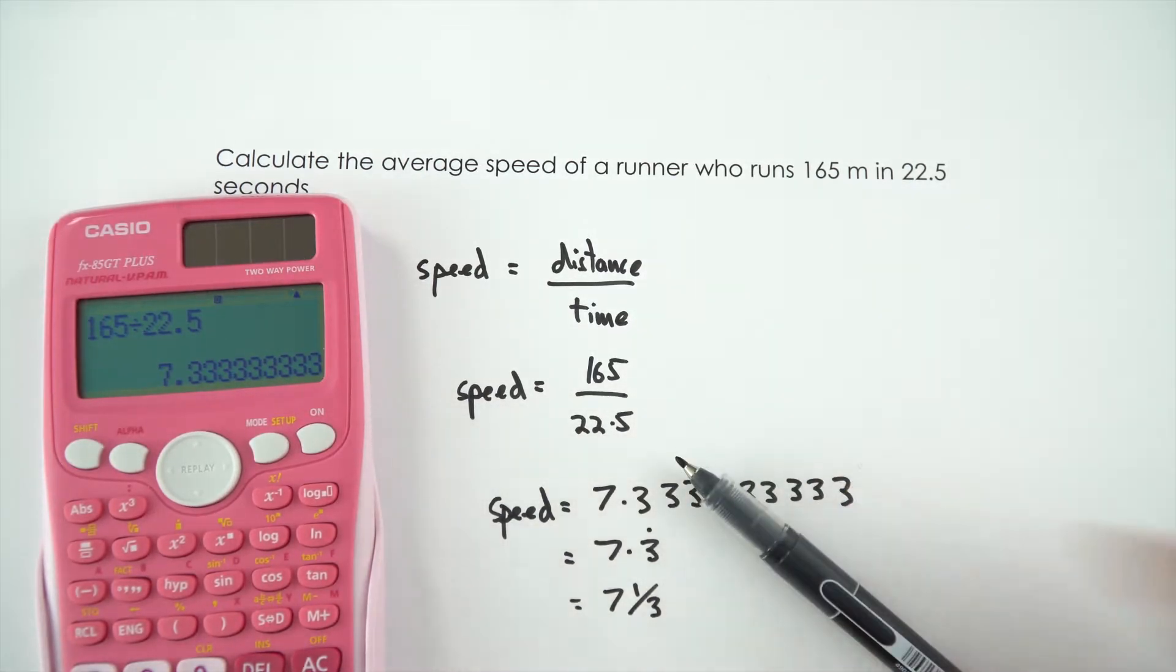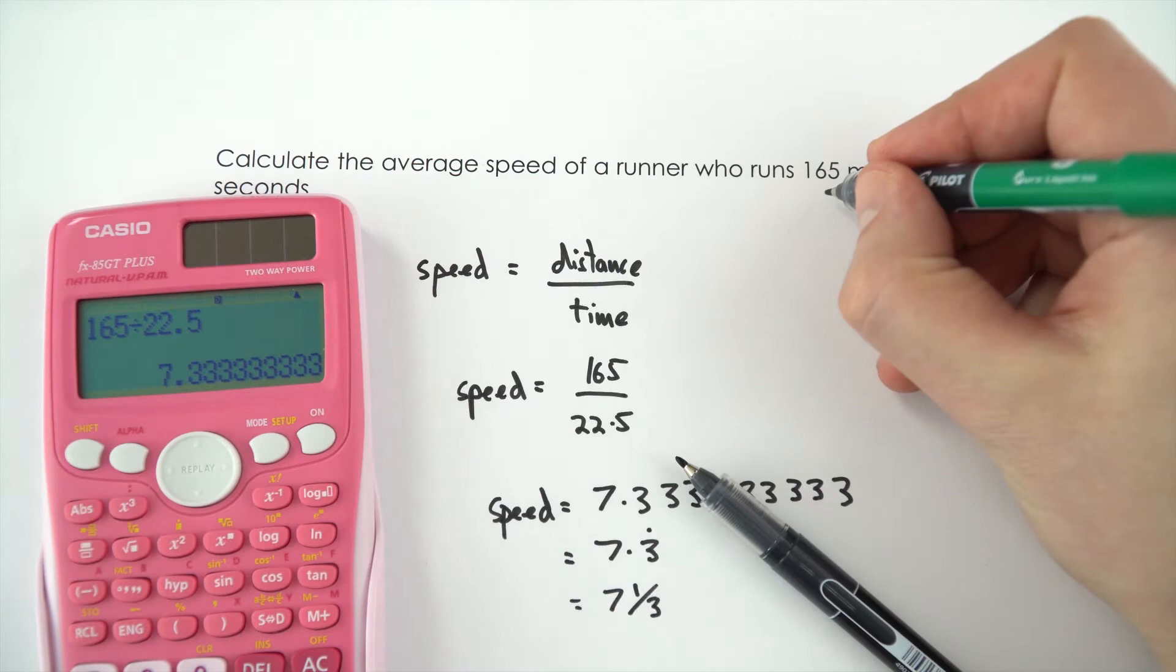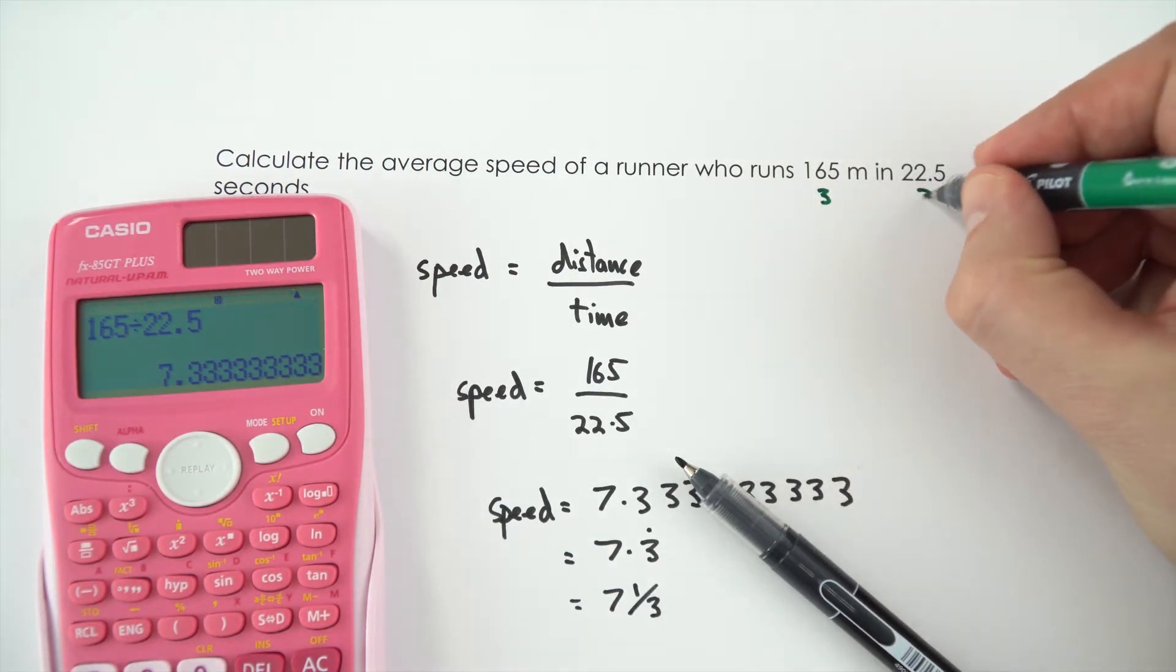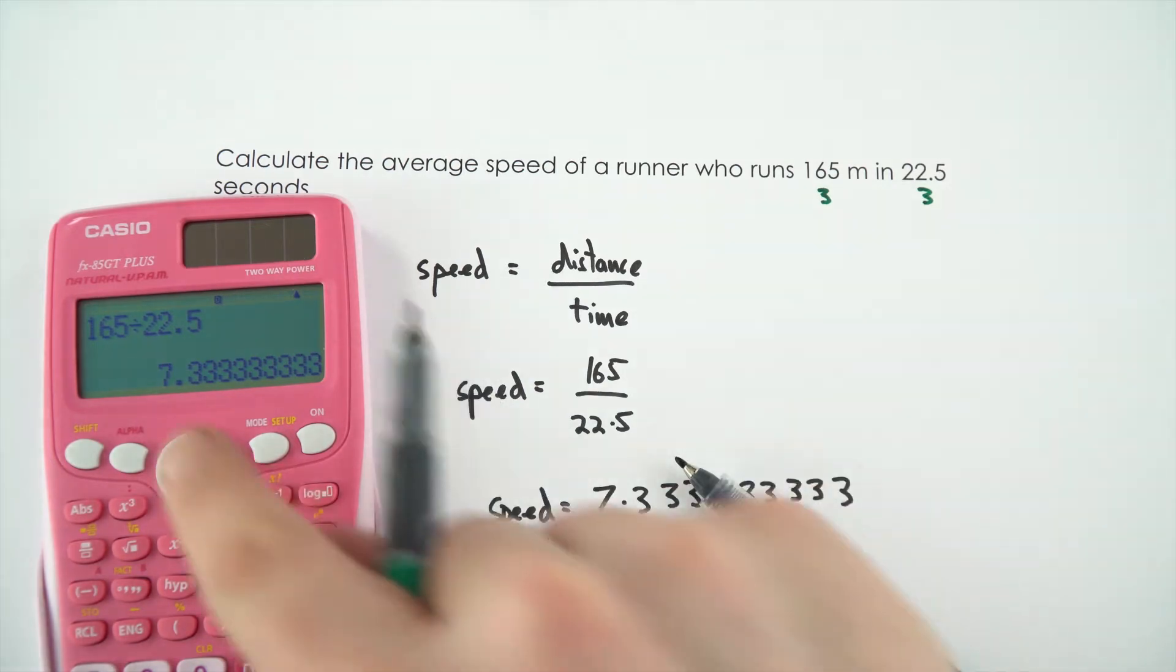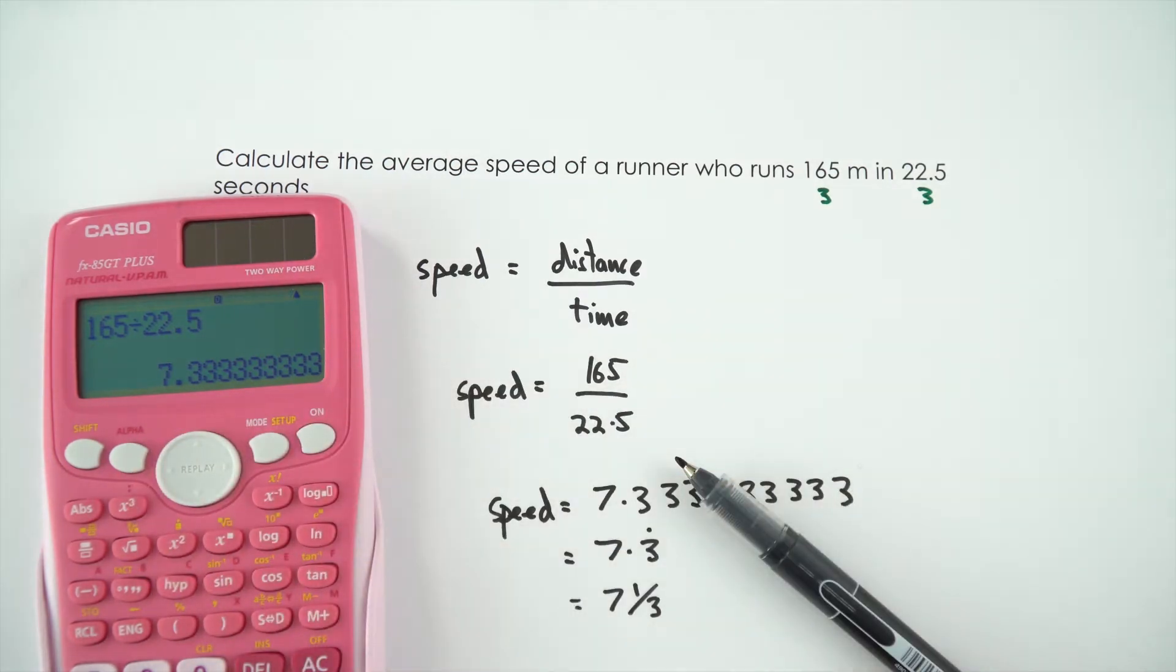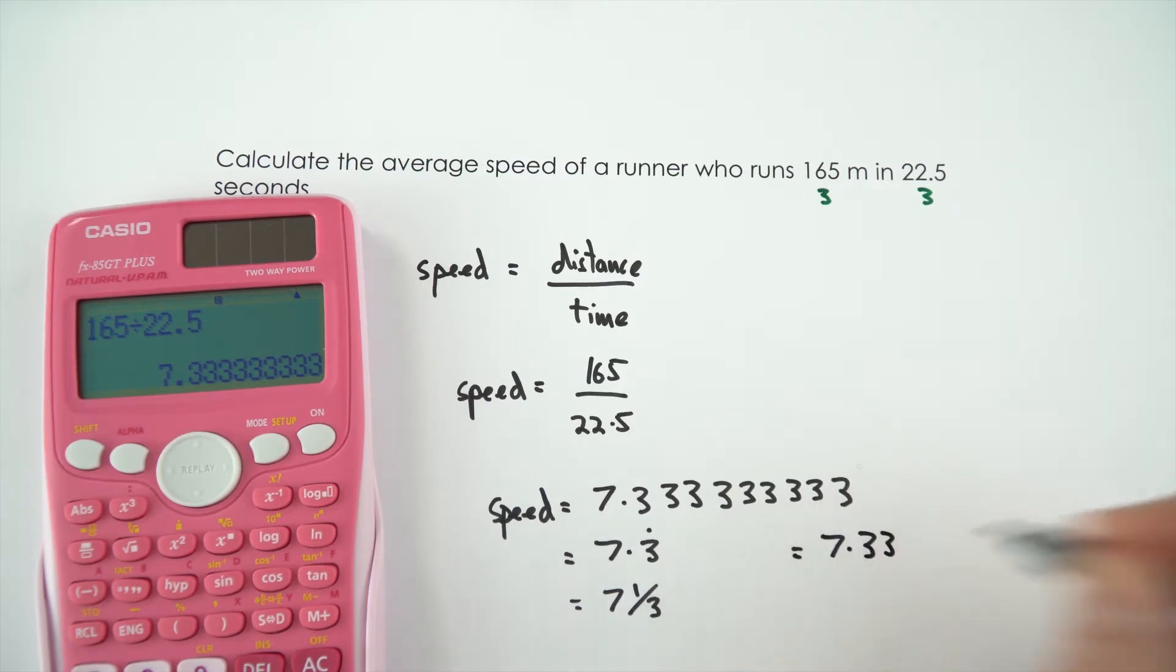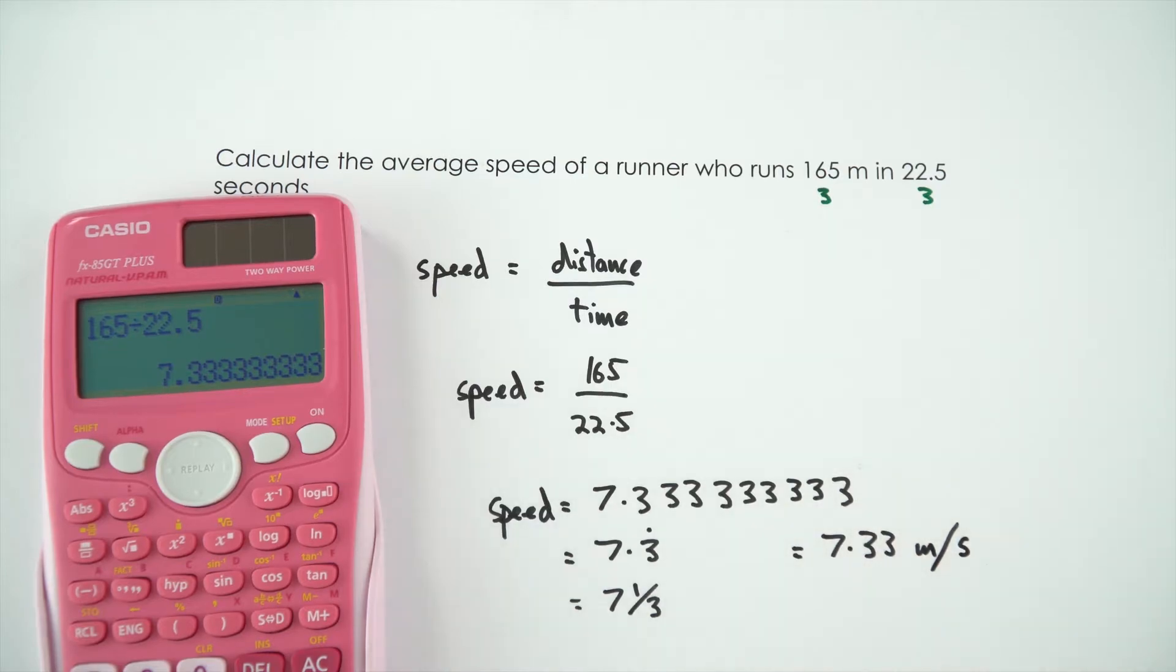And therefore we need to think about an appropriate number of significant figures. So we've got 165 is to 3 significant figures, 22.5 is to 3 significant figures, and therefore our final answer should be quoted to 3 significant figures. So that means it should be equal to 7.33, and then finally the unit of metres per second.